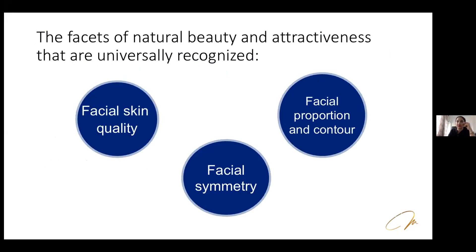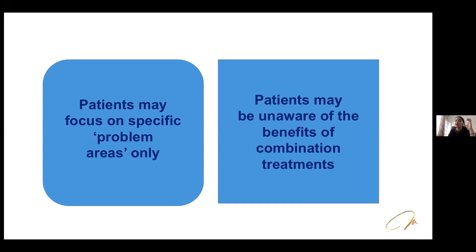The main features of natural beauty are facial proportions and contour, facial symmetry/asymmetry, and skin quality. Patients may focus on specific problem areas only. For example, a 35–40 year old female coming for smile design may have deep nasolabial folds or a saggy appearance from marionette lines. Doing dental work alone won't give as good a result as combining it with nasolabial fold correction, marionette correction, or cheek lifting — these features all enhance the smile.